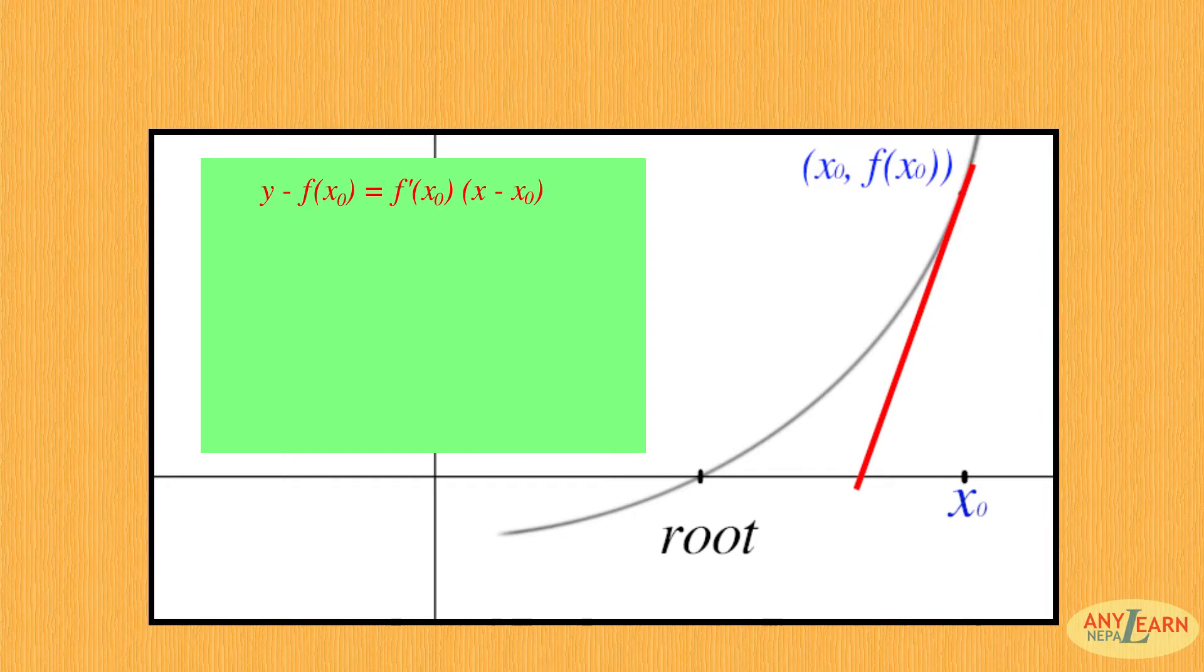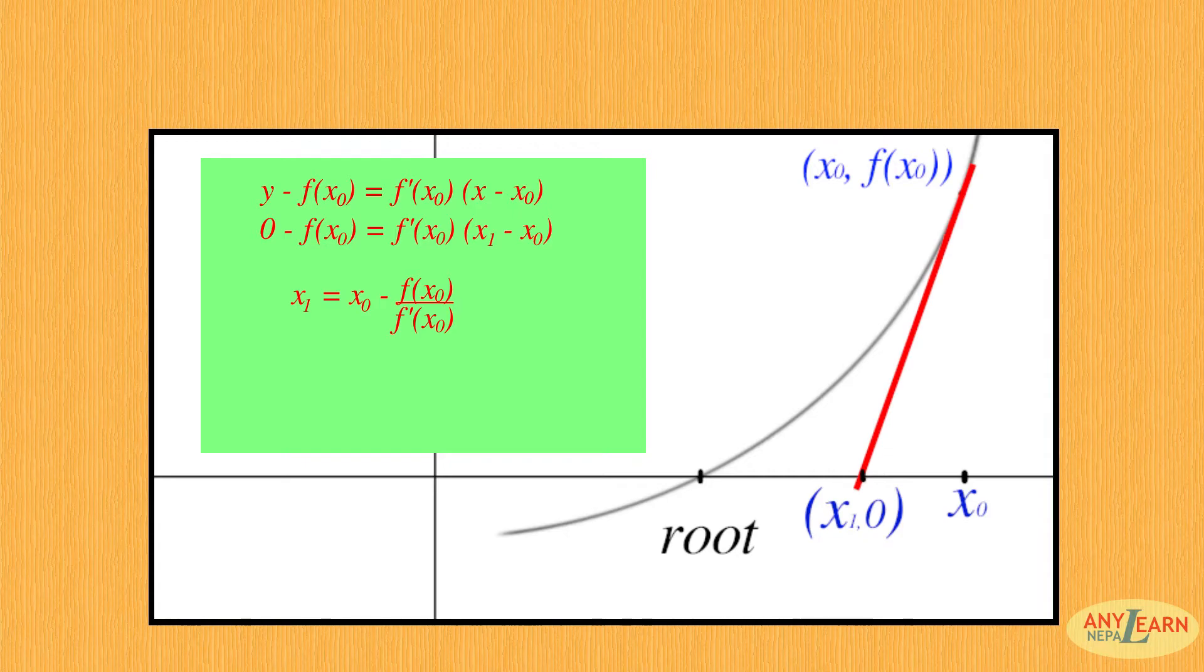But this tangent crosses the x-axis at (x1, 0). So substituting the value: 0 minus f(x0) equals f'(x0) times (x1 minus x0). And on solving, we get x1 equals x0 minus f(x0) by f'(x0).